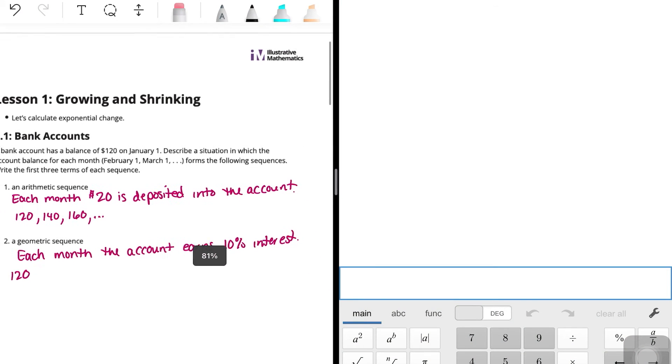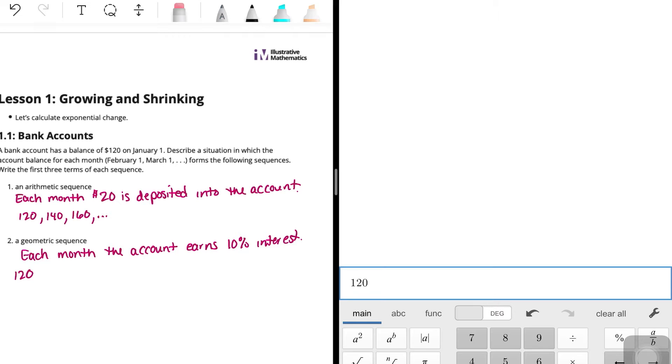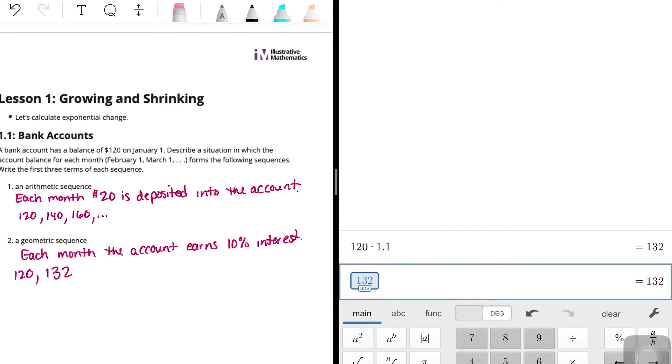We'll just use scientific. So I'll make this a little bit smaller. So you have $120, and you're multiplying by 110% because you have 100% of what you had plus another 10%. So times 1.1, and so we end up with $132 for the second month, for February. Then we're taking that 132, so the answer, times, again, 1.1 because it's growing by 10%. So you have 110% of what you had the month before.